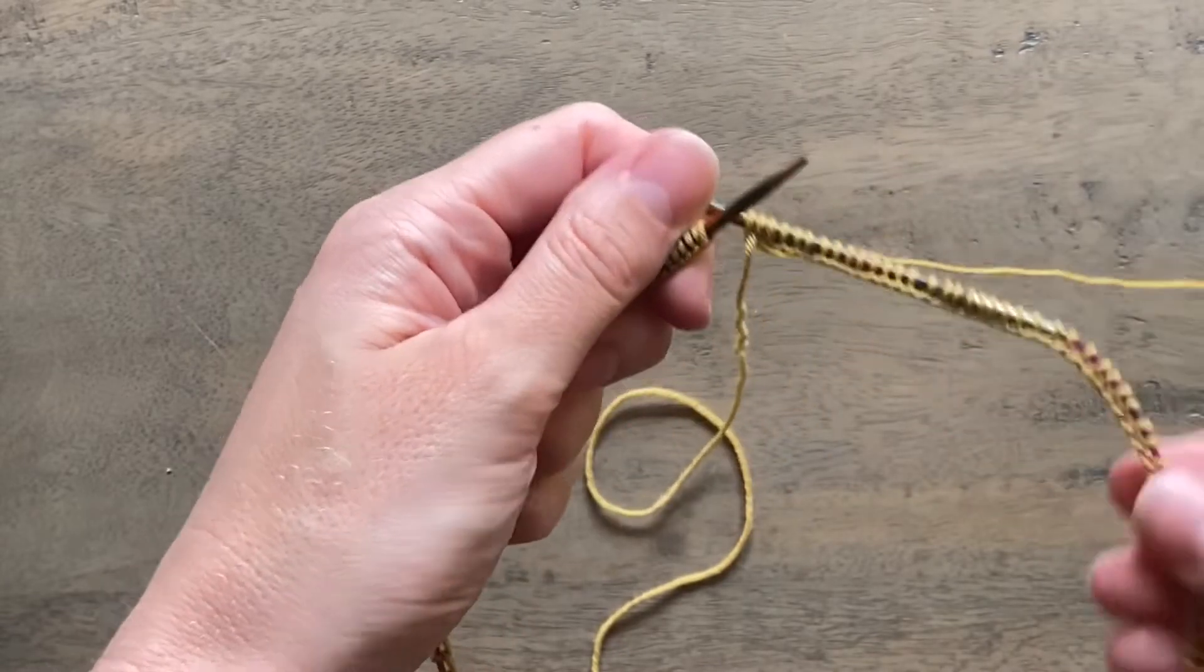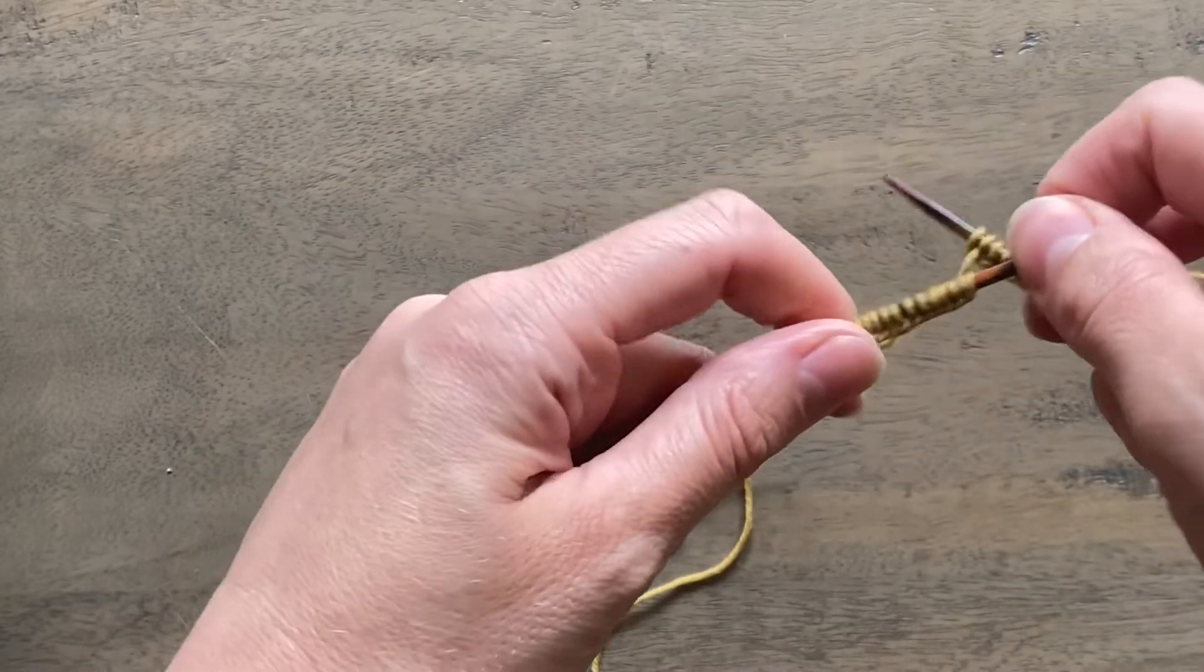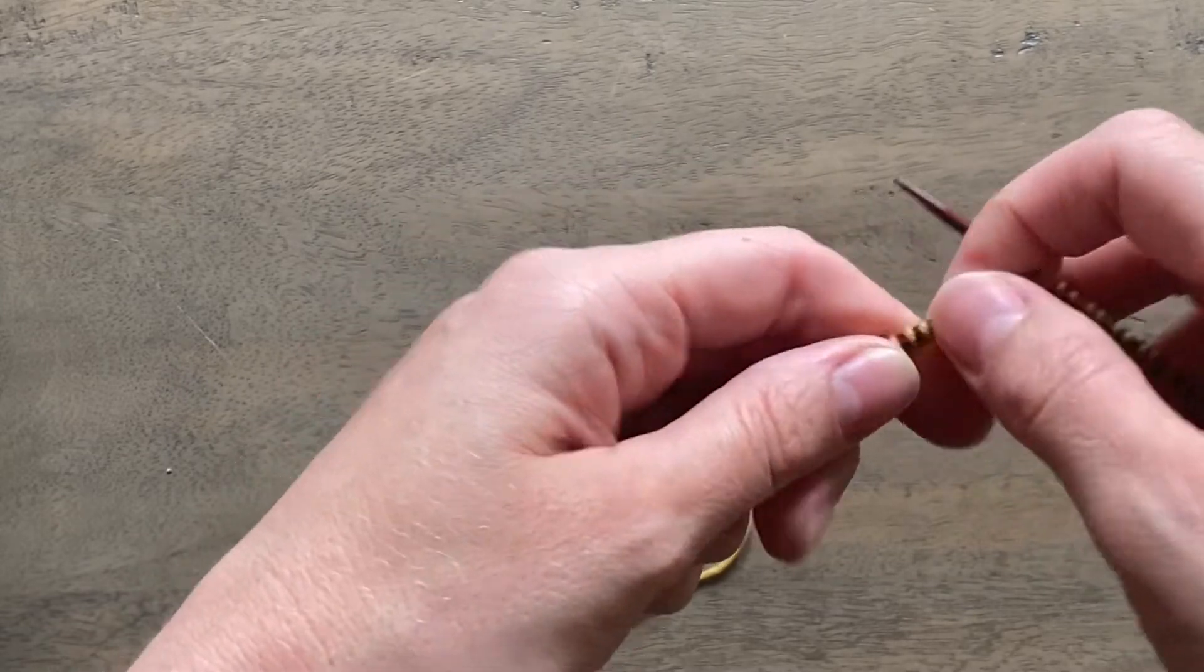Okay, so I've cast on my stitches that I need for the neckband and now I'm going to show you how to join those stitches in the round.